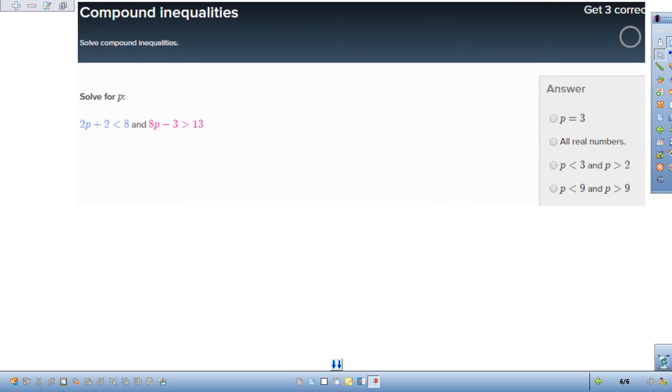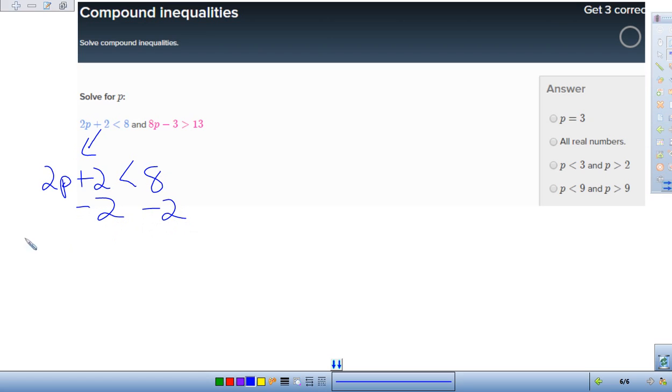Okay. So basically, we're just doing the same thing. But this time, it's an and statement. So it's only the areas that are true for both. When we're looking at the number line, we should see that both of them are true. So let's do this one first right here. This is 2p plus 2 less than 8.